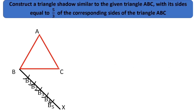Join B3 C. Now extend BC. Draw a line through B5 parallel to B3 C intersecting BC extension at C1.